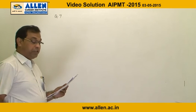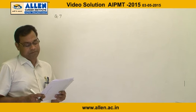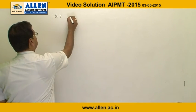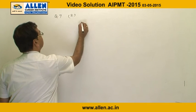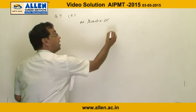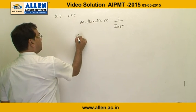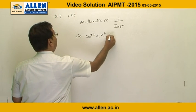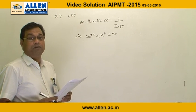Question number 7: the species argon, potassium⁺, and calcium²⁺ contain the same number of electrons. In which order do their radii increase? The answer is option 2, because in an isoelectronic series, atomic radii are inversely proportional to Z effective. Calcium²⁺ has more Z effective than potassium⁺, and argon is a neutral species, so argon has the maximum radius.